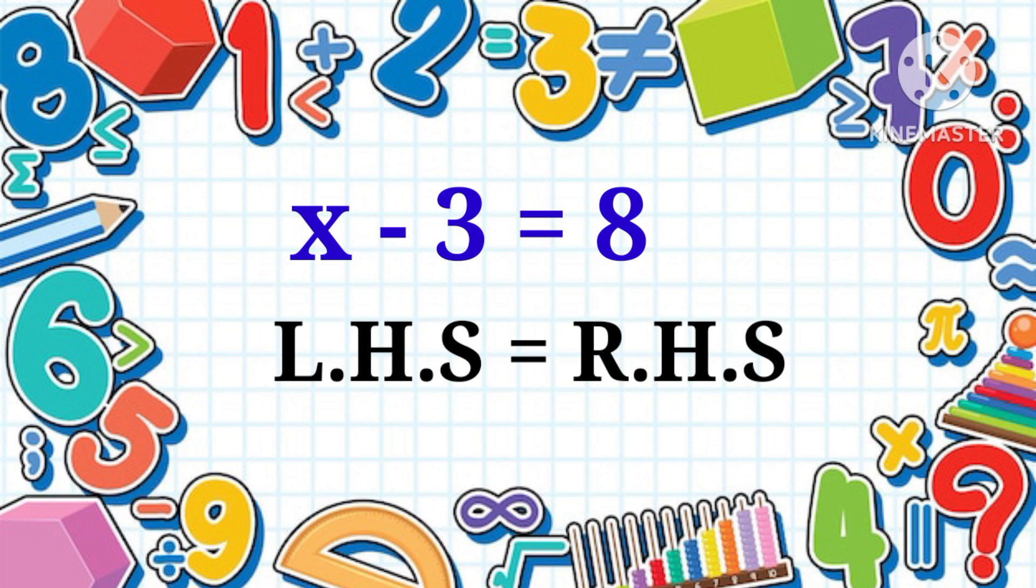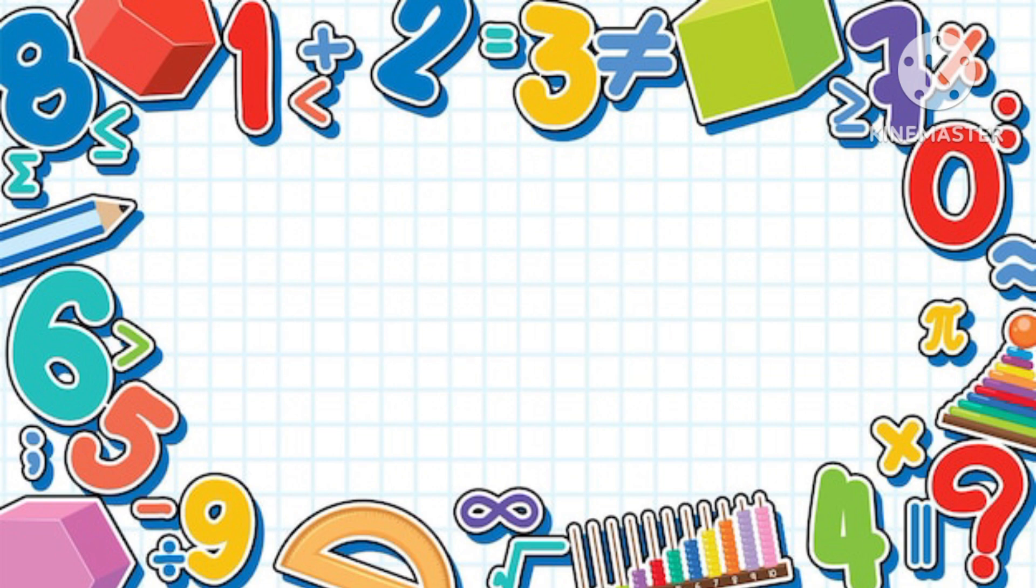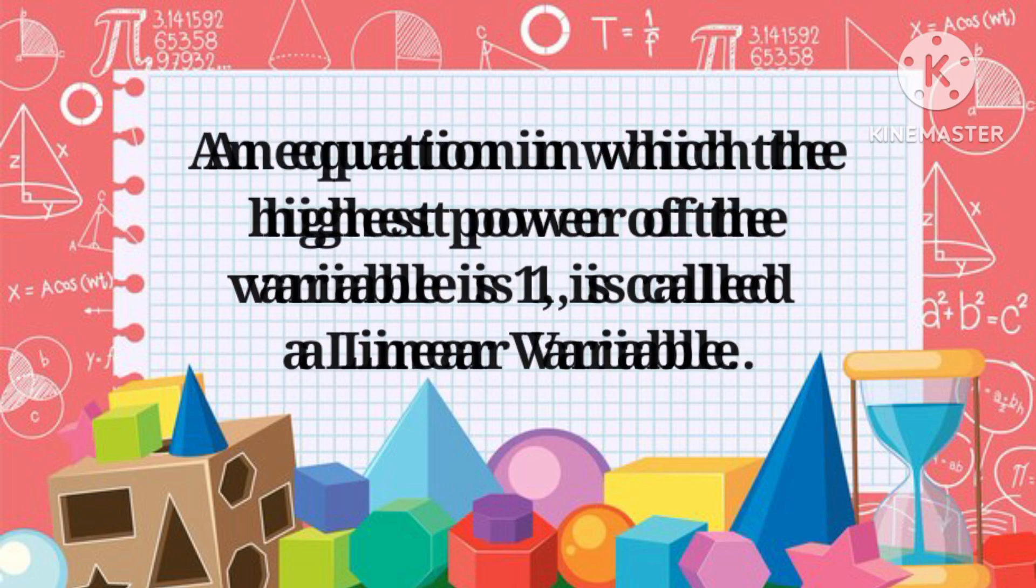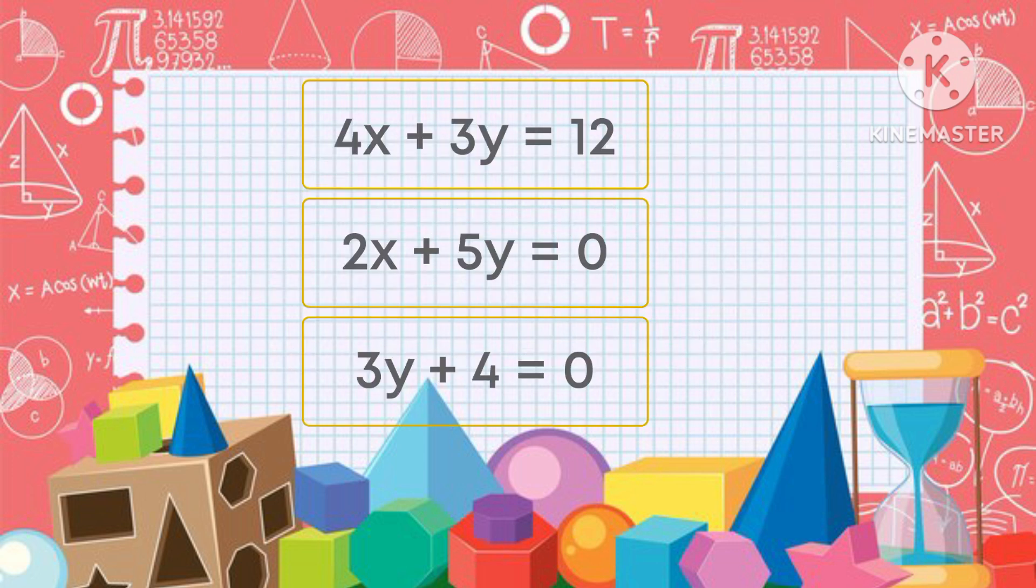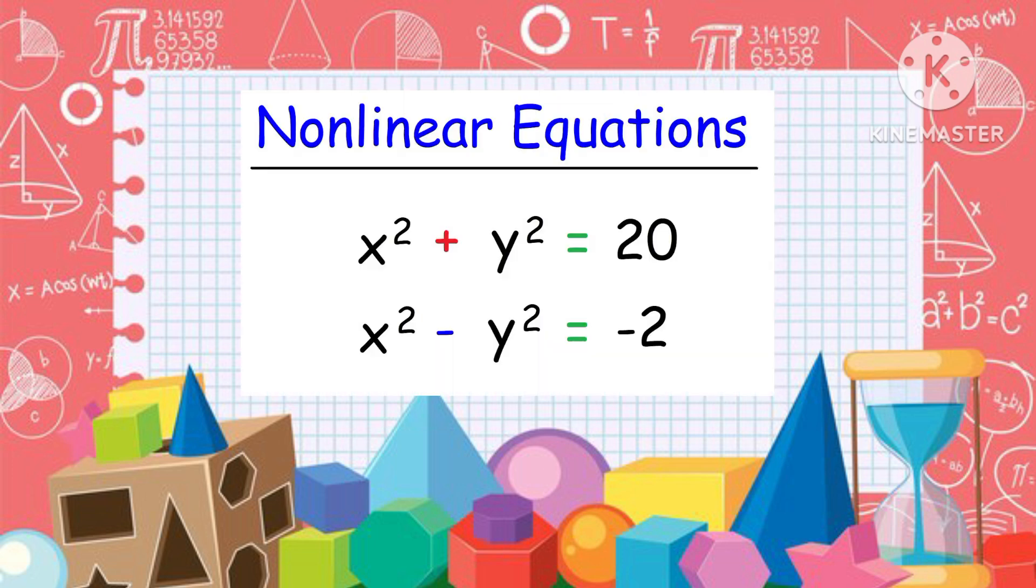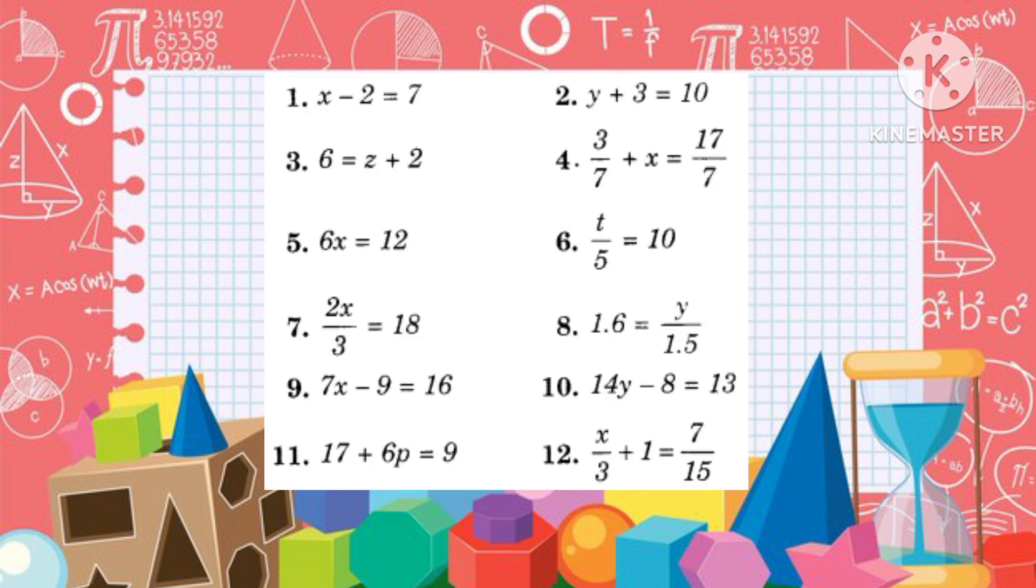An equation in which the highest power of the variable is one is called a linear equation. Here are some examples of linear equations. For every variable, maximum power is one. These are some examples of nonlinear equations. You can see that here the power of the variables are more than one. And these are the examples of linear equations in one variable.